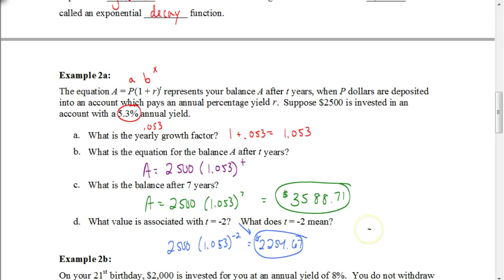It says what does T equal negative 2 mean? In the context of the problem, if T is a negative number, that means we're going back in time. So this represents how much money they had 2 years ago, or an investment made 2 years ago.